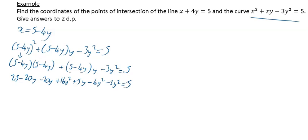It's a quadratic so we want to bring everything over to one side and put it equal to zero. So if I do that I'm going to get 9y squared minus 35y plus 20 is equal to zero.